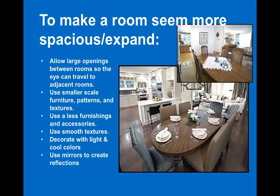To make a room seem more spacious or to make it expand, what you can do is allow large openings between rooms so that the eye can travel to adjacent rooms. Use smaller scale pieces of furniture, smaller scale patterns on your furniture, and smaller scale textures so that they're not really big and fluffy. Using less in this room will be more — if you're trying to make your room seem bigger, put less furnishings in it. Use smoother textures because they reflect light and make the room seem bigger. Decorating with light and cool colors will always have that expansion effect.